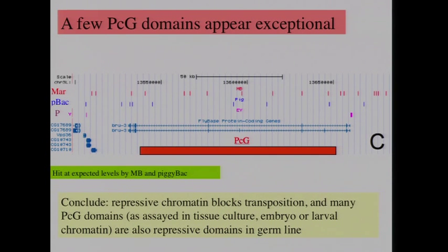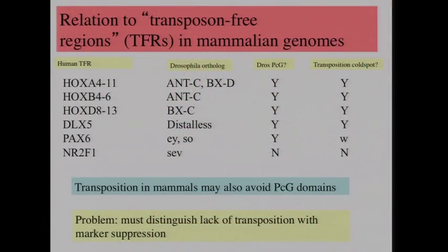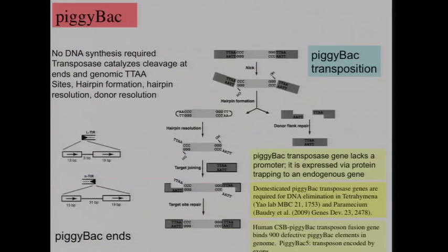This explains how Mariner deviates from randomness. Not everything follows an exact rule — there are a few Polycomb group regions not affected this way. Since the Polycomb group regions are mapped in other cell types or tissue culture, but transposition occurs in germ cells, these must be Polycomb group regions not actually assembled in the germline, so elements are free to move there. This may be related to transposon-free regions in mammalian genomes, which are often also Polycomb group or have Polycomb group homologs in Drosophila.